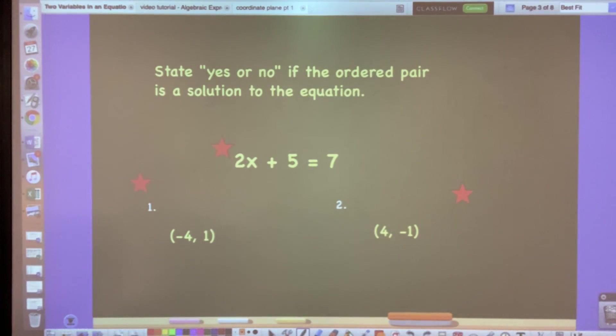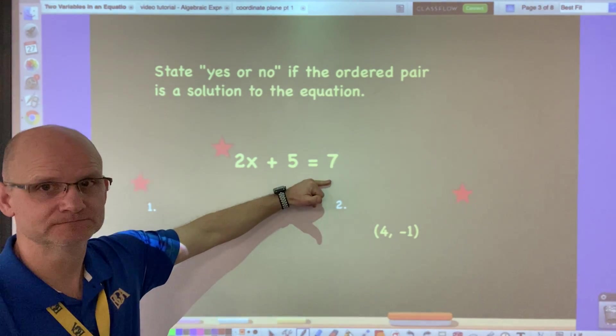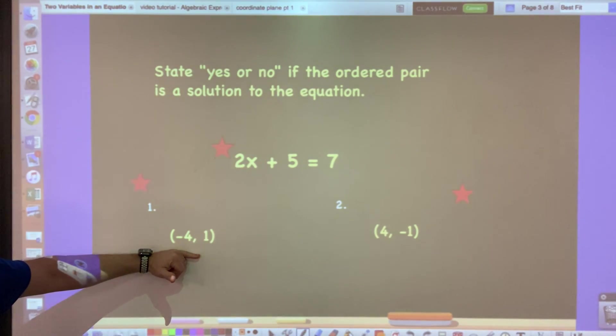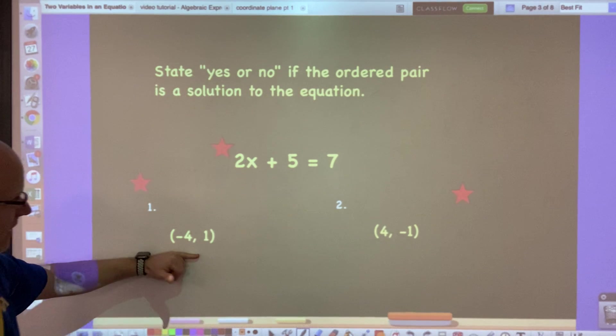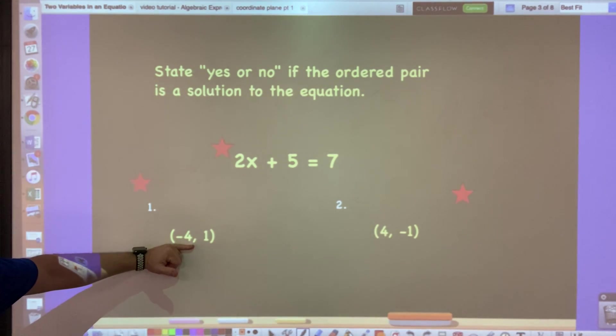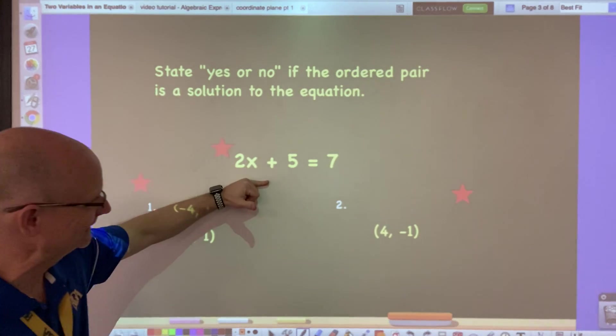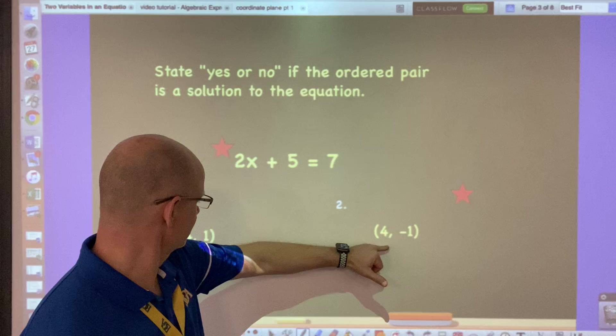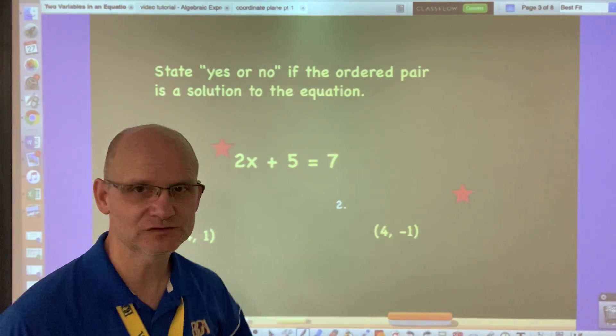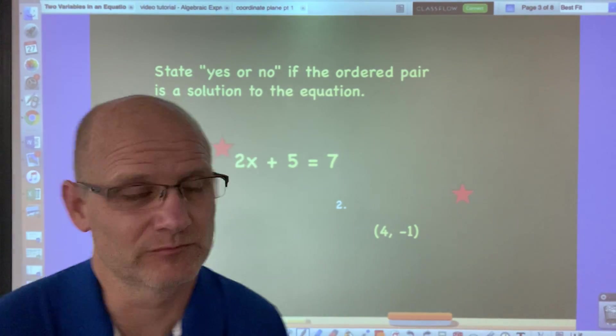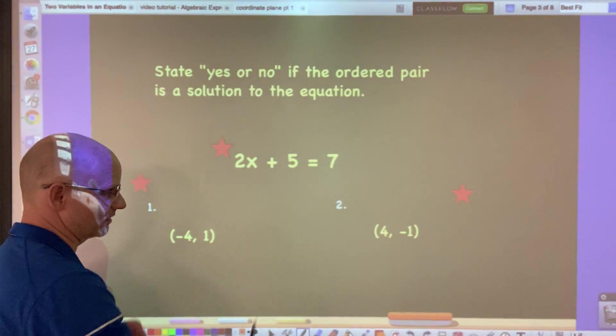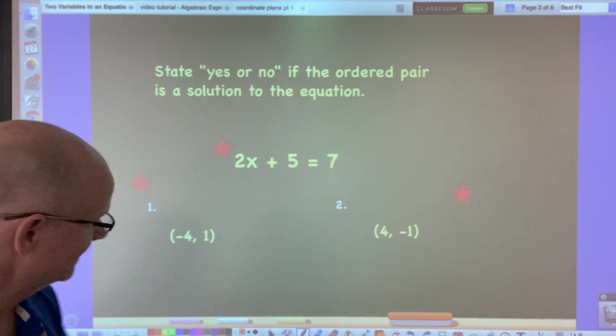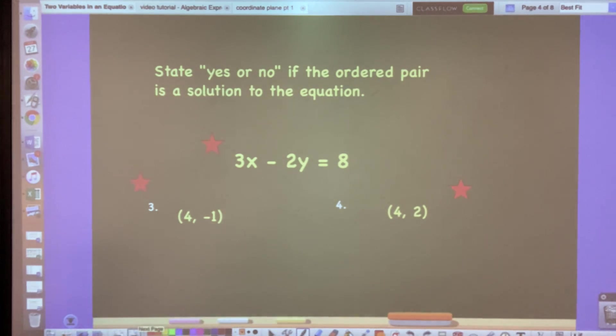Here's all I want you to do. It says state yes or no if the ordered pair is a solution to the equation. So here is the equation, write it down, and then plug this in. For number one you're just either going to write yes or no. Would this ordered pair work if you plug these numbers in? Would this be a true statement? You're just writing yes or no, but you're going to copy the equation down for each problem. So press pause, do that, and then you're going to do it for this page as well.